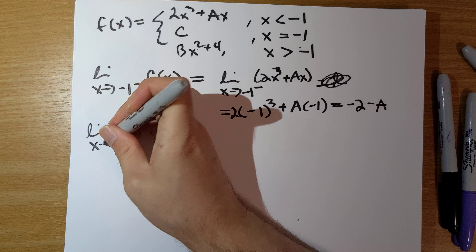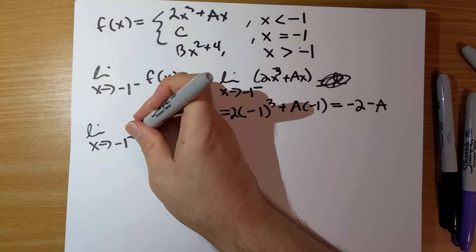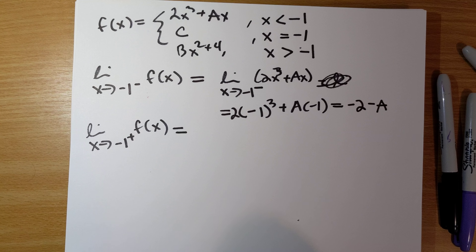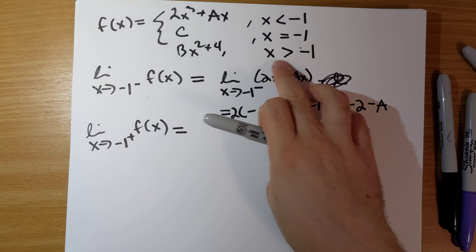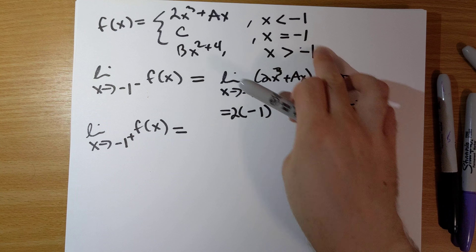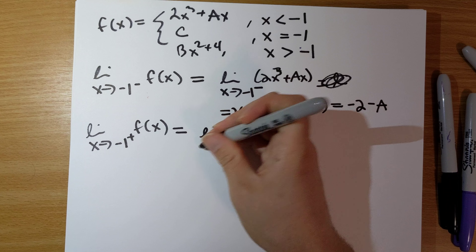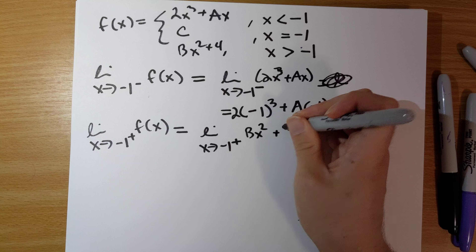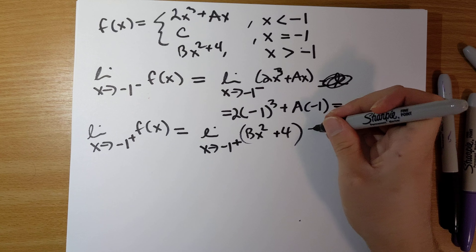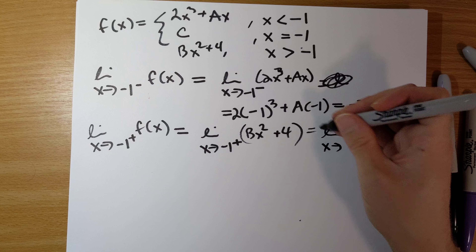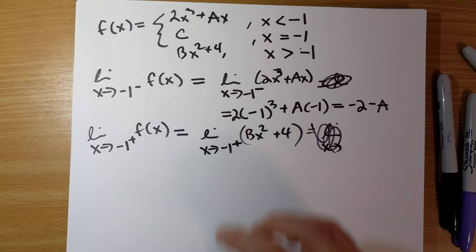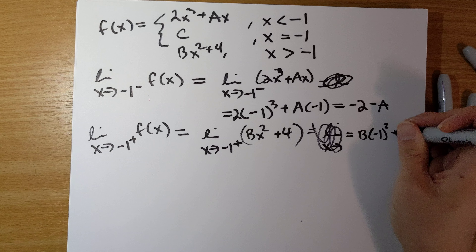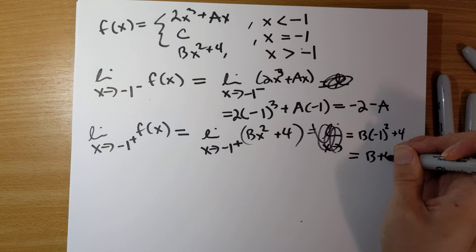For part b, we're tasked with the limit as x goes to negative 1 from the right of f of x. Now x is larger than negative 1, so we have the formula bx squared plus 4. We can again evaluate this by substituting in negative 1: it's b times negative 1 squared plus 4, so this is just b plus 4.